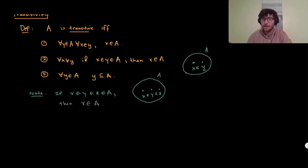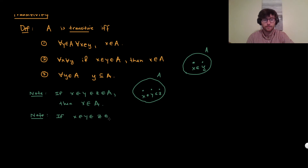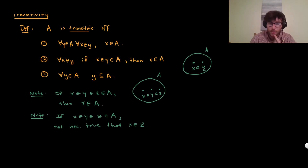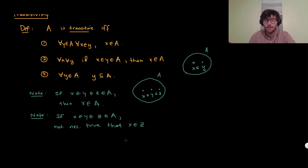One thing this is not saying: if A is transitive and x ∈ y ∈ z ∈ A, it is not necessarily the case that x is an element of z. We won't know that from this definition alone — though with ordinals we will — but just using transitivity, we don't have that condition.